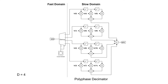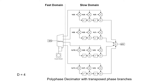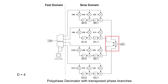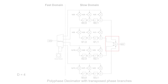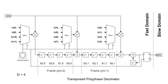A similar approach can be applied to the polyphase decimator. The filter phases can be optimized via pipelining, just like the multiplexed polyphase interpolator. It's possible to further optimize the structure by pipelining the phases and multiplexing the filter coefficients. As a result, the delay lines are merged into a single interleaved delay line. The products from the different phases form a frame, and to obtain the final result, the values from the frame need to be summed. This is implemented via an accumulator at the output, which produces one output sample per frame. The final filter structure is almost identical to the transposed polyphase interpolator, with the only major difference being the summing operation at the output.